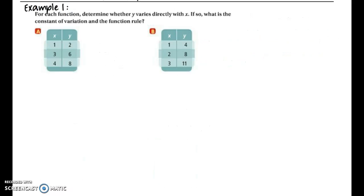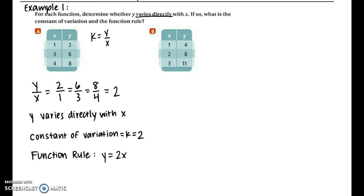In example one, we have two different tables of values, and for each function we need to determine whether y varies directly with x. If it does, we need to find the constant of variation and the function rule. For the first table — pairs (1,2), (2,4), (3,6), and (4,8) — we find the y over x ratio for each pair. We get 2 every time, so this is a direct variation: y varies directly with x.